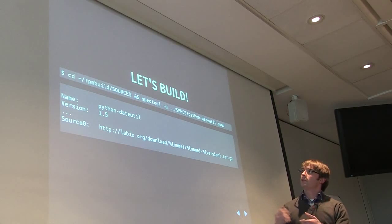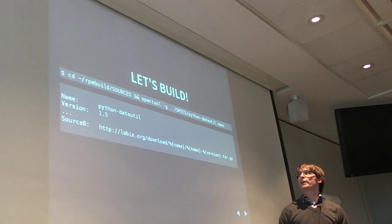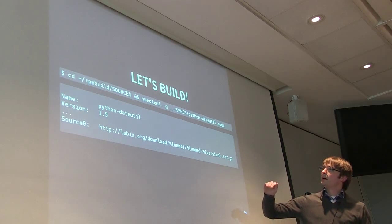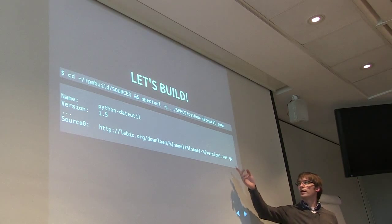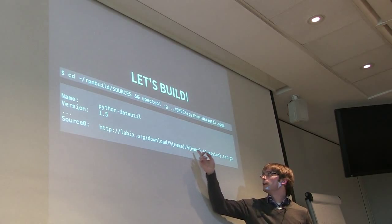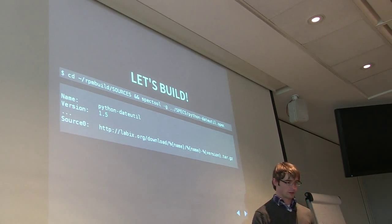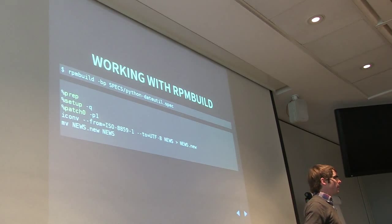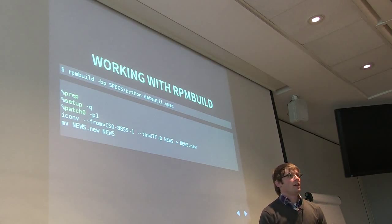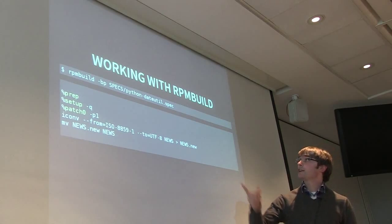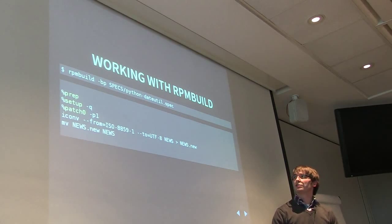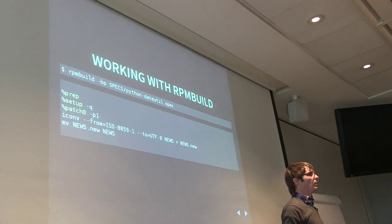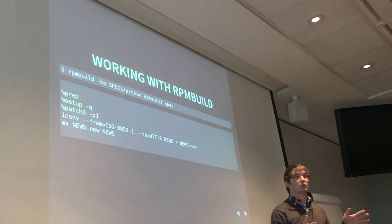Let's do a build here. We're going to go to our sources directory and use a really awesome tool called spectool. The dash-g option will go out and download all of the sources you need for that. It's going to grab the tarball with the name, version, and all that stuff, and put it in this directory. Then we're ready to RPM build. If we were doing this step by step: the dash-BP flag to RPM build is just going to run the prep step. What that does is it runs the setup, which unpacks the tarball and gives you the sources ready to go, and it runs any patches.